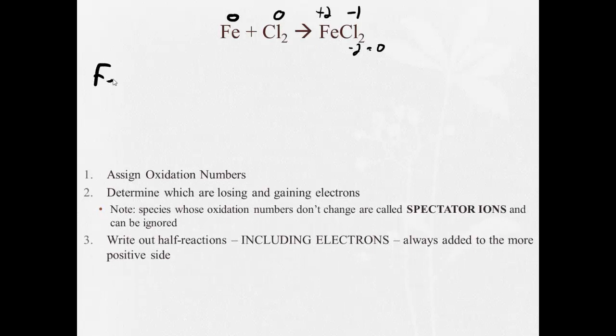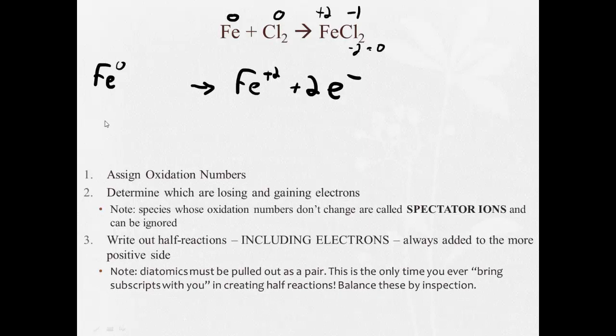Alright, so here I have iron. Fe zero is becoming Fe plus two. It does so by losing two electrons. Chlorine, it's a diatomic, so it's got to be pulled out as a pair. Cl2 is becoming Cl minus one by gaining two electrons. So chlorine zero, two of them, gains two electrons and becomes Cl2 minus one, where each one is a minus one.